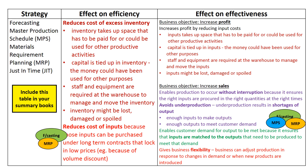Finally, the MPS and MRP give the business flexibility to adjust production in response to changes in customer demand or when new products are introduced. By maximising production of output to meet customer demand, these strategies maximise the sales of output by the business and therefore contribute to the business objective of increasing sales.